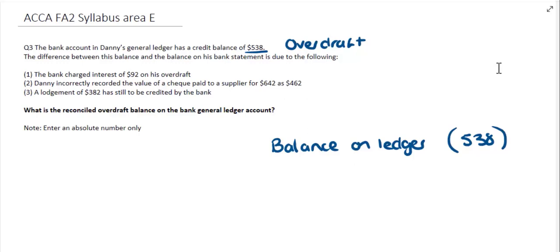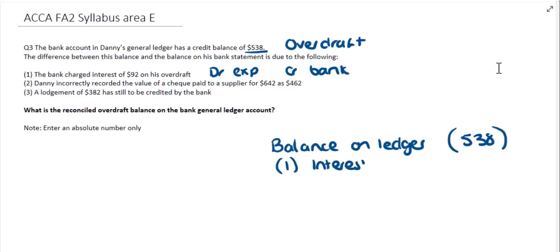The first difference tells us that the bank charged interest of $92 on the overdraft, which won't have been included on the ledger, so we're going to have to adjust for it. Bank interest is an expense, so we debit the expense account and credit bank, because the charge would reduce our overall bank account. Therefore, I'm going to adjust against my overdraft the interest amount coming off the balance — shown in brackets — as $92.